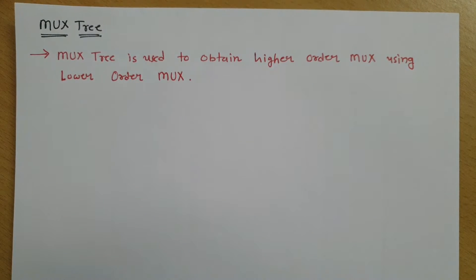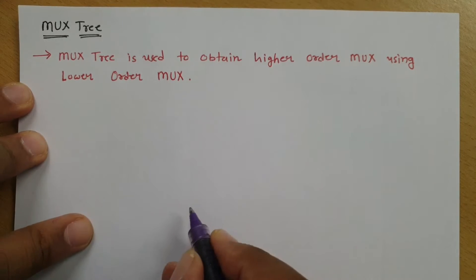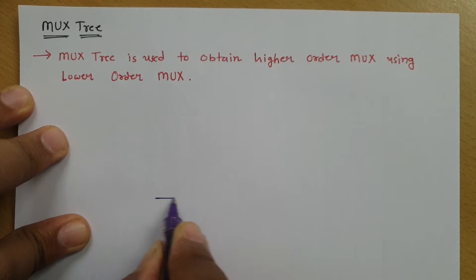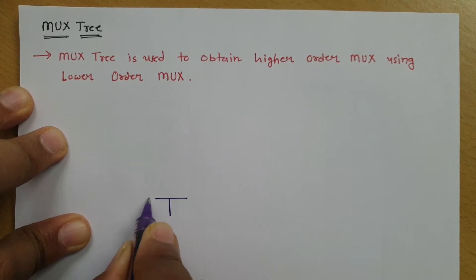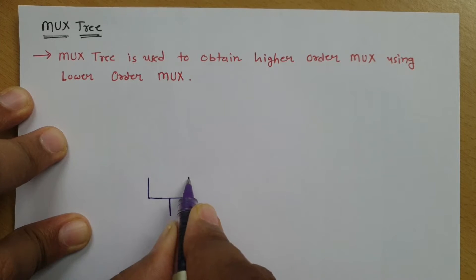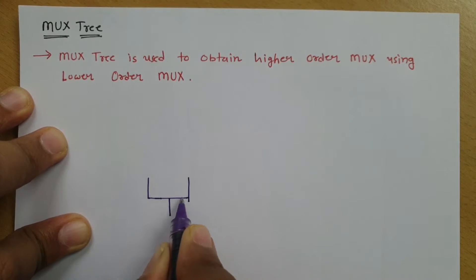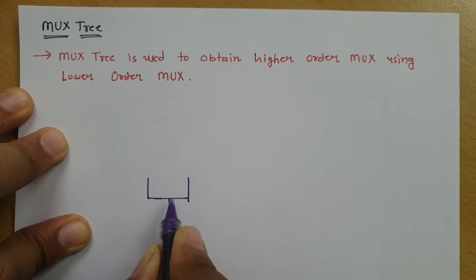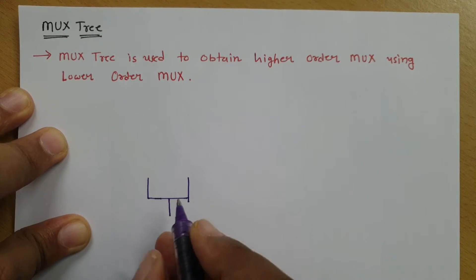Let us try to understand this with a practical example so it will be more clear. For example, if I have one multiplexer here, and let us say this is a 2×1 multiplexer.